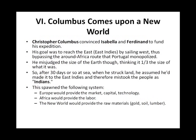Topic 6: Columbus Comes Upon a New World. Christopher Columbus convinced Isabella and Ferdinand to fund his expedition. His goal was to reach the East by sailing West, thus bypassing the around-Africa route that Portugal monopolized. He misjudged the size of Earth, though, thinking it was one-third the size of what it actually was.